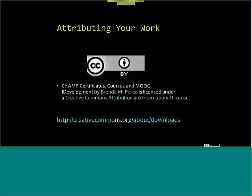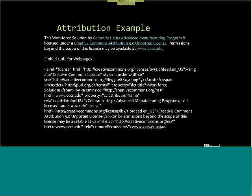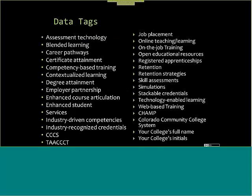Here's what it looks like online — the CHAMP certificates, courses, and MOOC in development by Brenda Perea, licensed in the Creative Commons. My attribution example is: 'This workforce solution created by Colorado Health Advanced Manufacturing Program is licensed in the Creative Commons.' That's the embed code for web pages. This is also different from CHAMP 1 and 2, where we could develop our own licenses and only needed metadata tags TAC (T-A-A-C-C-C-T) and C-O-E-T-C.